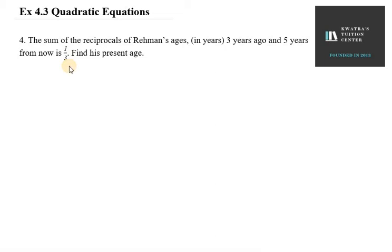Hello everyone, let's start with question number 4 of exercise 4.3. It is given that the sum of the reciprocals of Raman's age 3 years ago and 5 years from now is 1 over 3.